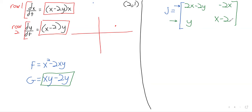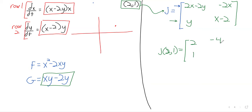The next step is to take this fixed point (2, 1) and plug it into the Jacobian. We're interested in the Jacobian evaluated at the fixed point. Plugging in x = 2 and y = 1: 4 - 2 = 2, -4, 1, 0. So our Jacobian at (2, 1) is the matrix [[2, -4], [1, 0]].